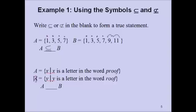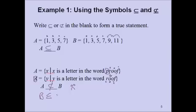I'm going to correct that to a B. So A is the set {x | x is a letter in the word 'proof'}, and B is the set {y | y is a letter in the word 'roof'}. Well, the letter P isn't anywhere in 'roof', so A is not a subset of B. However, R shows up in both, O shows up in both, and F shows up in both — so it turns out that B is a subset of A.